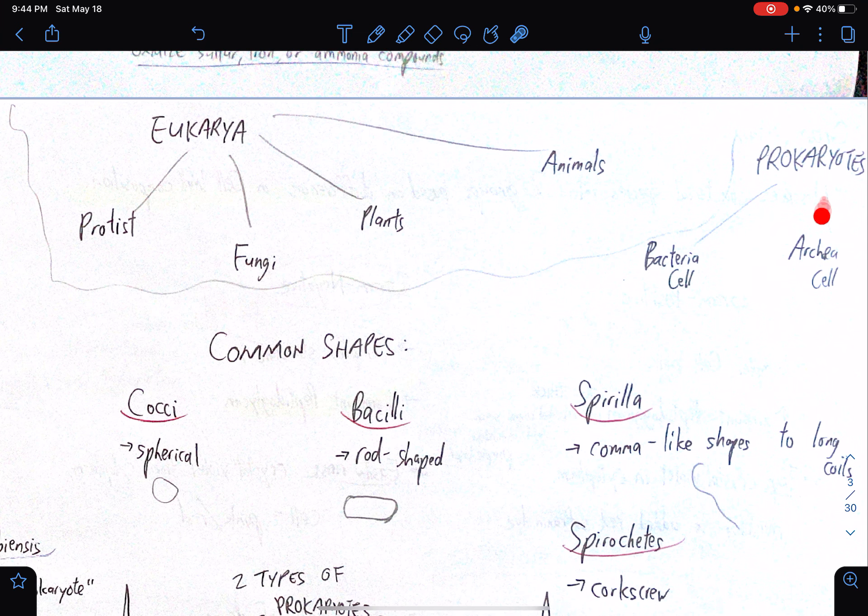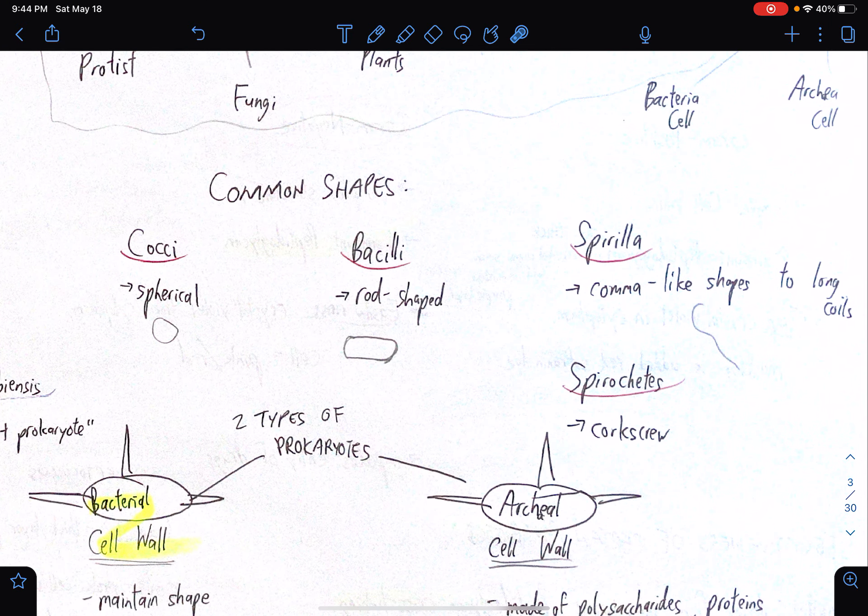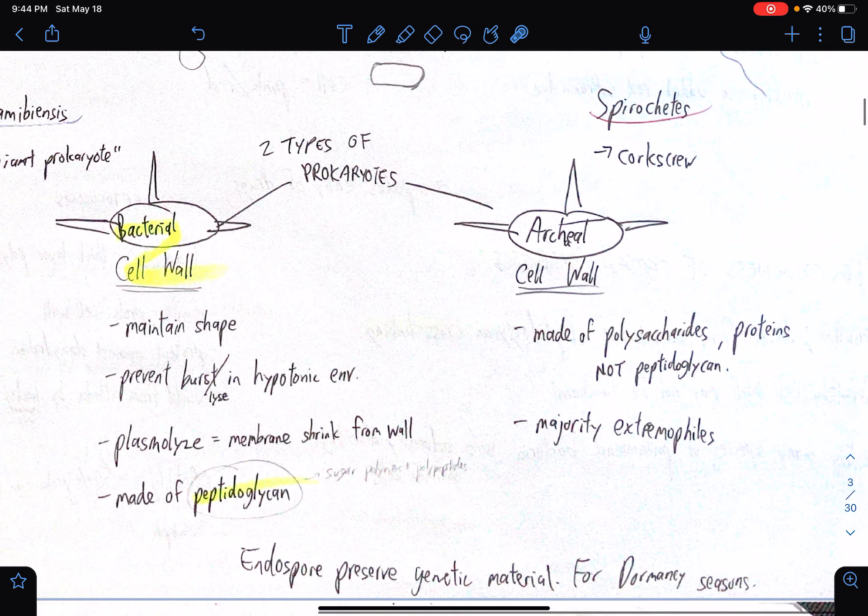What are the common shapes? We have cocci, spherical, in other words. Bacilli, rod-shaped. Spirilla, comma-like shapes, to long coils. So they kind of look like worms from this image. Spirochetes. I'm not sure how to pronounce this. But essentially, corkscrew. Spirochetes.